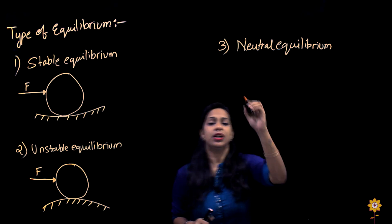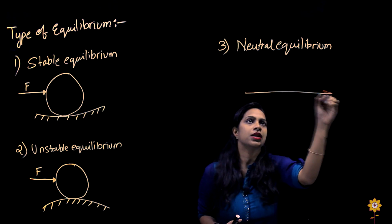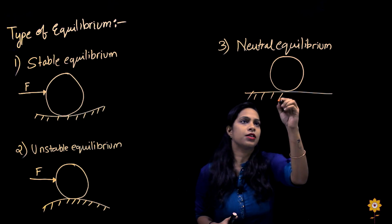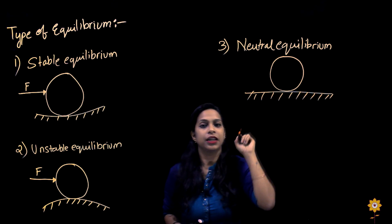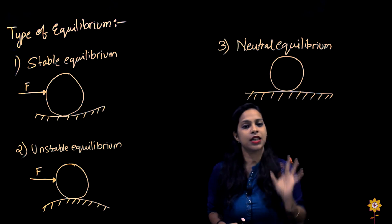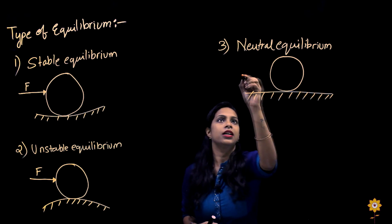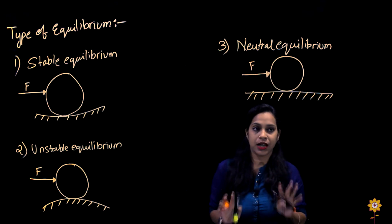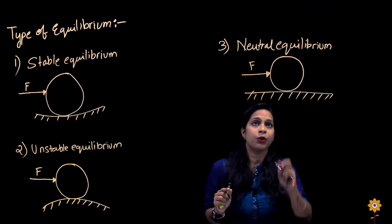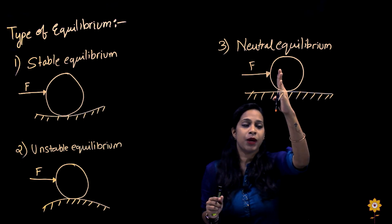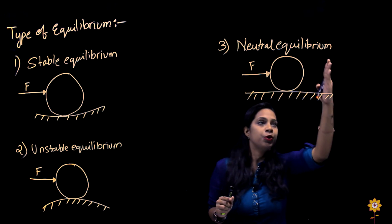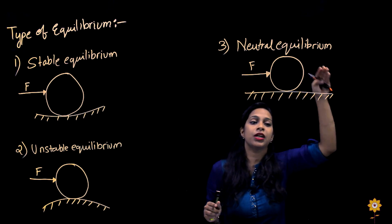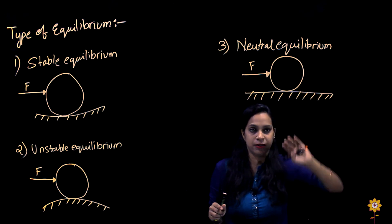The third type is neutral equilibrium. Consider the same surface and cylinder in static equilibrium. When an external force F is applied, the object displaces from its original position and acquires some other position, but it remains stable in that new position itself. So in neutral equilibrium, the object neither returns to its original position nor continues to become more unstable — it simply stays in its new position.